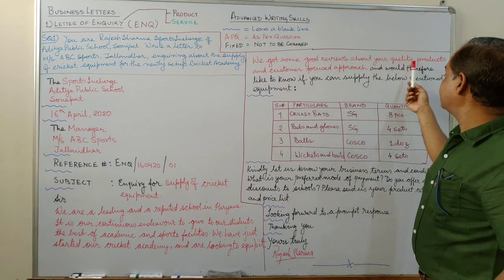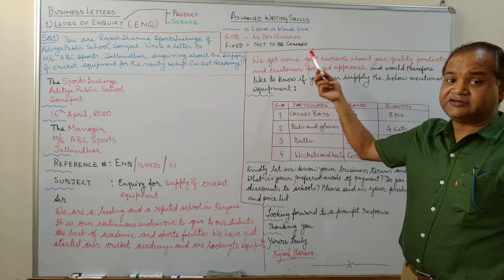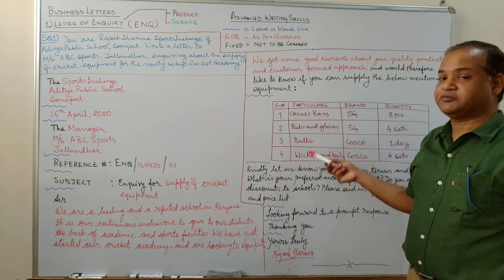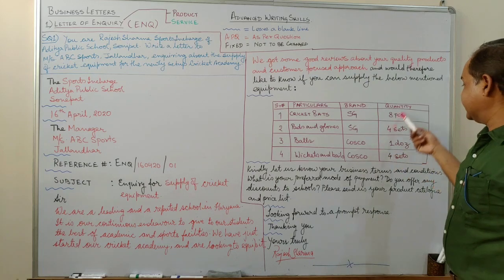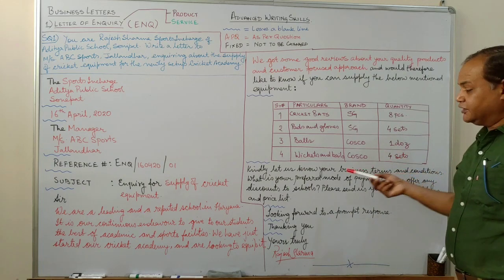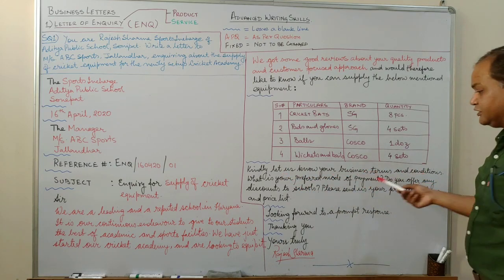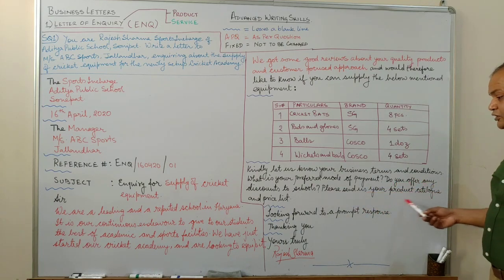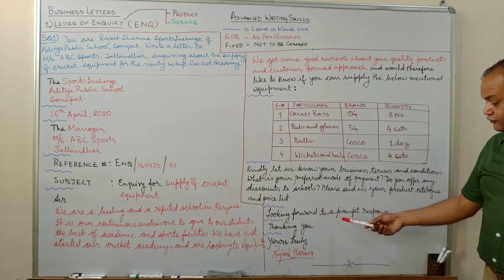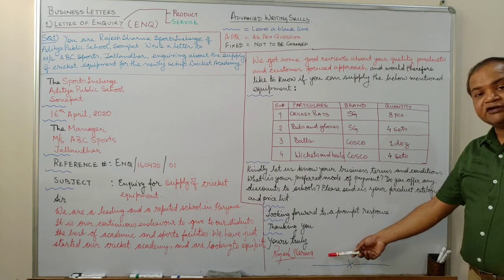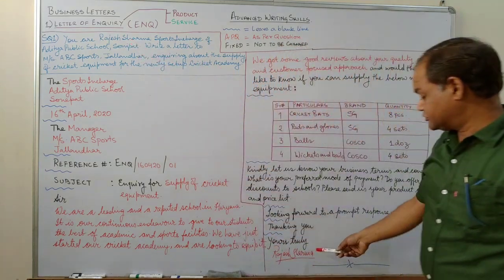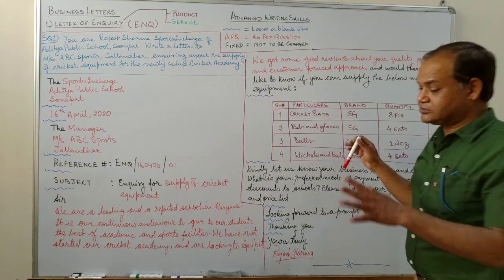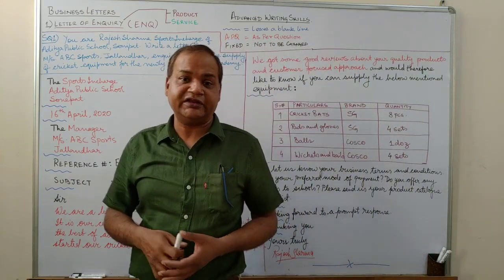Then, we got some good reviews about your quality products and customer focused approach. So why I am writing to you? Because of this. And would therefore like to know if you can supply the below mentioned equipment. And then you make the list of equipment, the brands, the quantities that you require. And the third paragraph is fixed. Kindly let us know your business terms and conditions. What is your preferred mode of payment? Do you offer any discounts on schools? Please send us your product catalog and price list. Looking forward to a prompt response. Thanking you. Yours truly, Rajesh Sharma. The name is given. So I will sign as the person given in the question. And that, children, is the simplest and the most organized business letter of inquiry that you can write.